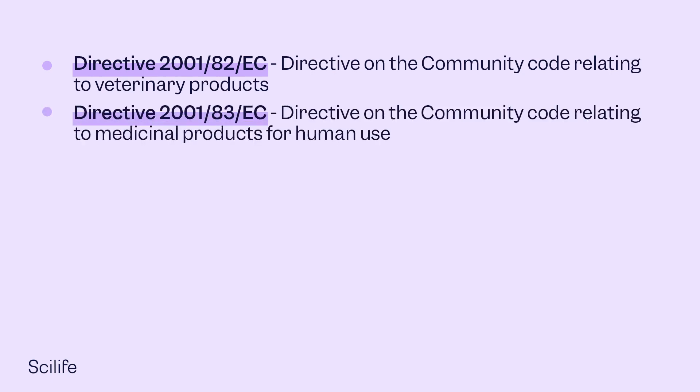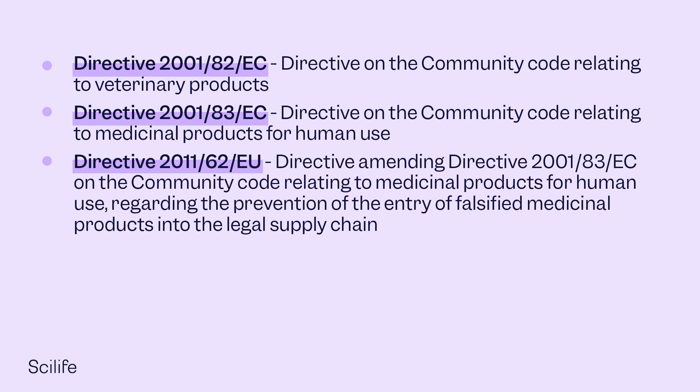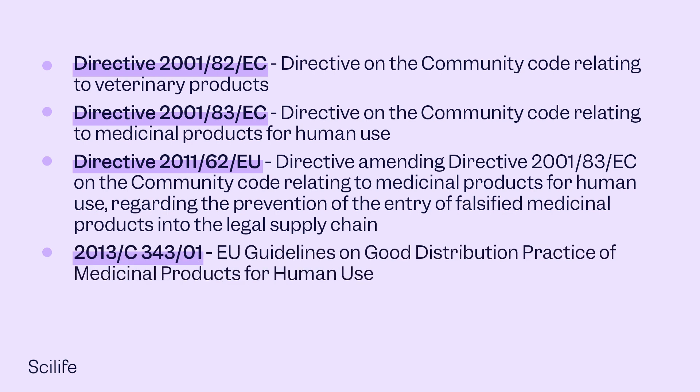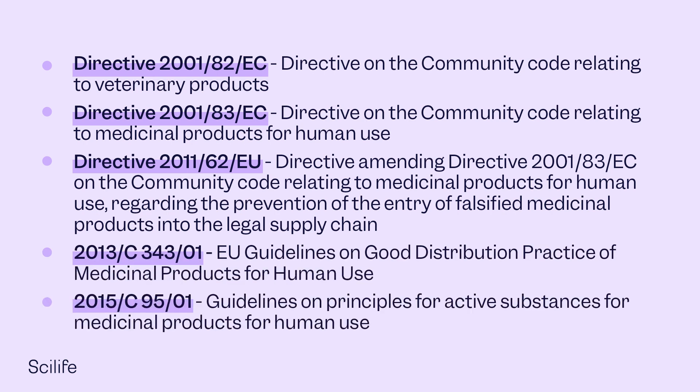There are GDP directives, guidelines and reports. The main ones are as follows. There are two directives for the distribution of medicine in the EU: one for medicinal products for veterinary use and the other for medicinal products for human use. There are also two guidelines: one GDP guideline for medicinal products and the other for active substances.